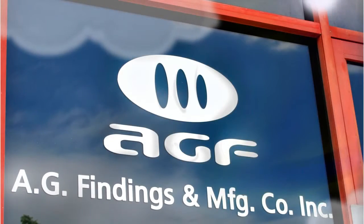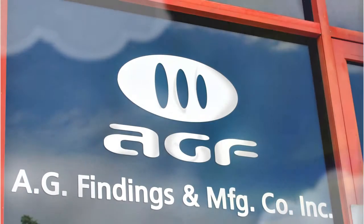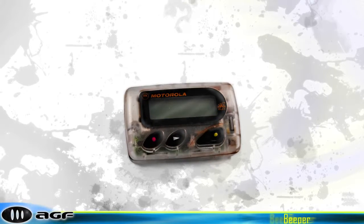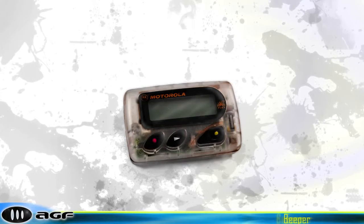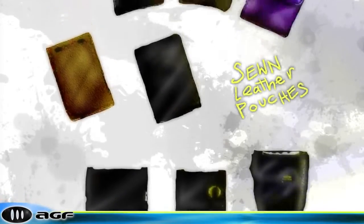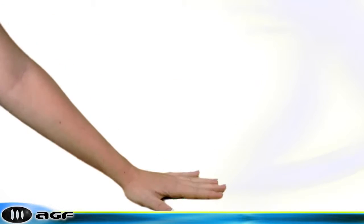For over a decade, AGF has been obsessed with creating the best products to protect your mobile devices. Our story begins with the beeper. In 1993, AGF, also known as AG Findings, began making beeper accessories - you name it, we had it: beeper chains, beeper bungees, pewter chains, sewn leather pouches, even neck straps.